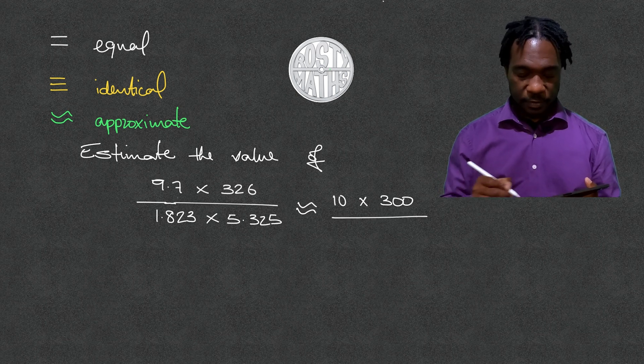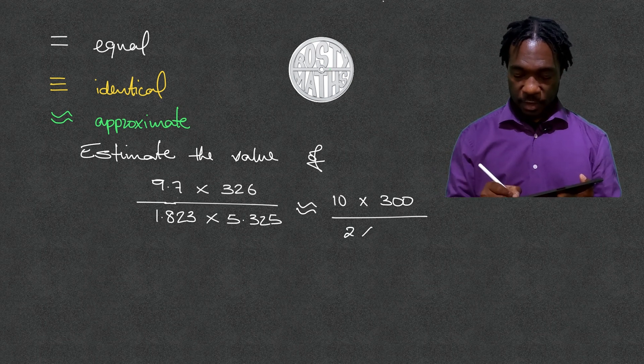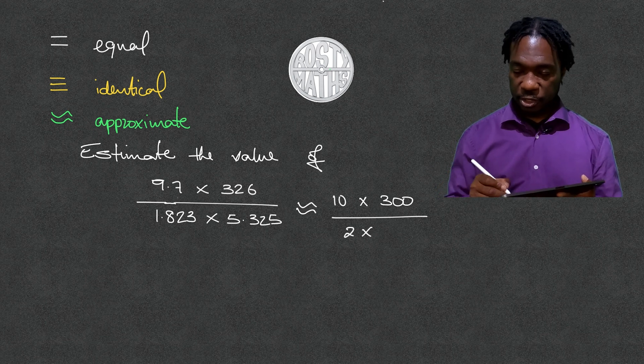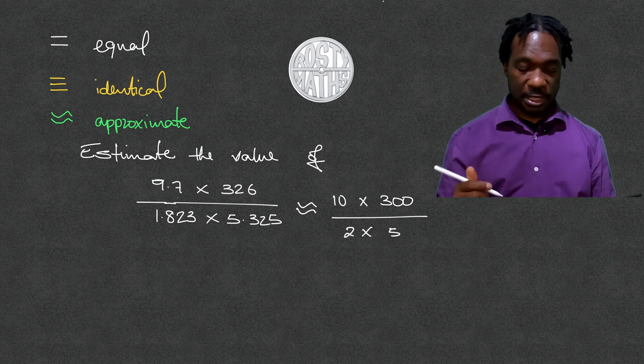Put our dividing line. 1.8 will become 2, and then we times that by 5.235, which just becomes 5. So everything has been rounded to one significant figure.